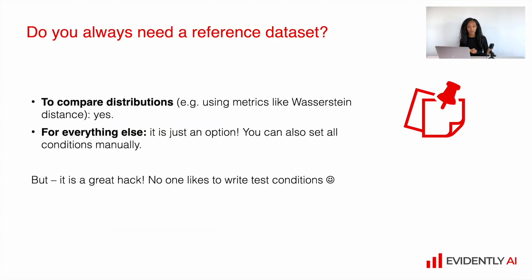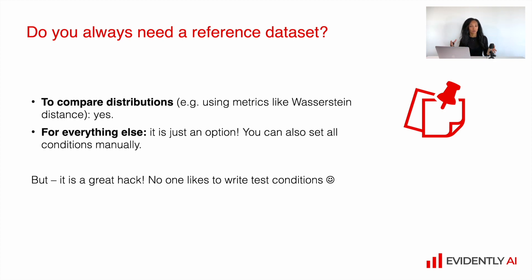The next question is: do you always need to have a reference dataset? The answer is actually no. You do need a reference dataset if you want to compare distributions using metrics like Wasserstein distance, because you need two distributions. But if you use a one-sample statistical test, you can live without a reference dataset. To compare two distributions with two-sample statistical tests or distance methods, you need reference data. For everything else it's just an option — you can manually specify all test conditions for each individual test if you have a limited number of columns and understand the expected ranges and descriptive statistics.